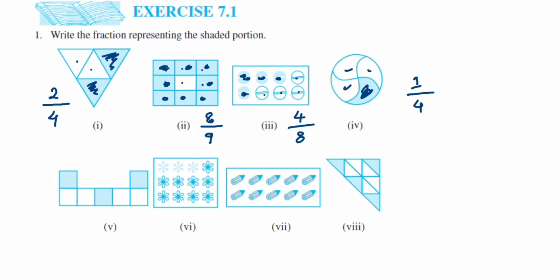For the fifth figure, how many parts are given? One, two, three, four, five, six, seven — so the denominator is seven. The total parts shaded are one, two, and three, so it becomes three upon seven.